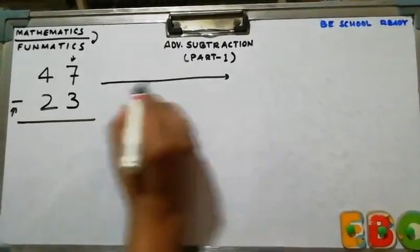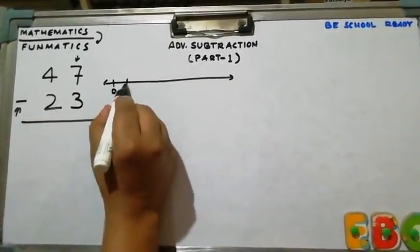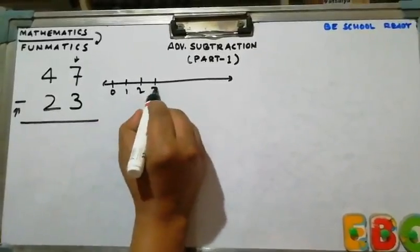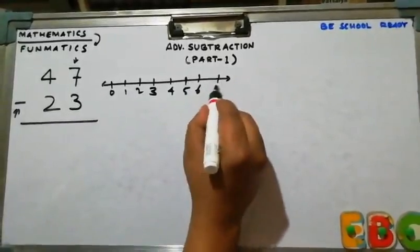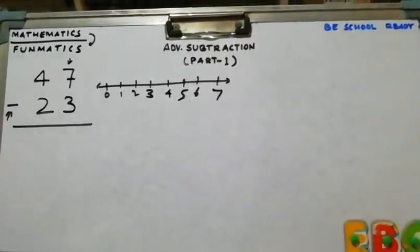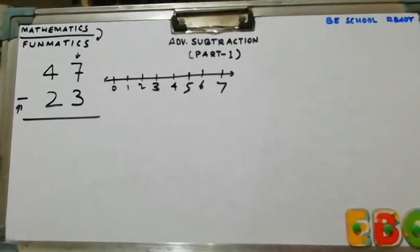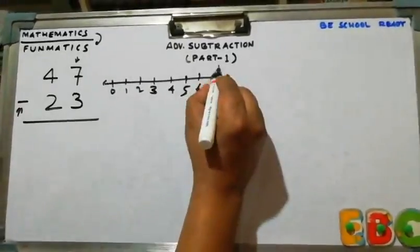So, do this: 0, 1, 2, 3, 4, 5, 6, and 7, right? Now, this is our starting point.